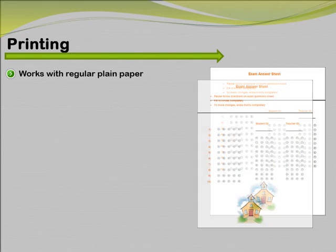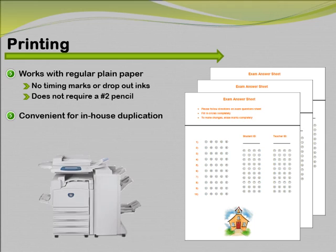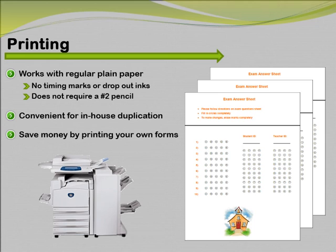Having the ability to process forms printed on plain paper eliminates the need for special paper forms that contain dropout inks and timing marks down the side. Respondents are no longer required to use a number 2 pencil to fill in their responses. Forms can be printed on a laser printer or photocopied, which makes in-house duplication easier than ever before. By using plain paper and eliminating the need to outsource the printing process, Remark has saved customers thousands of dollars per year in form costs.